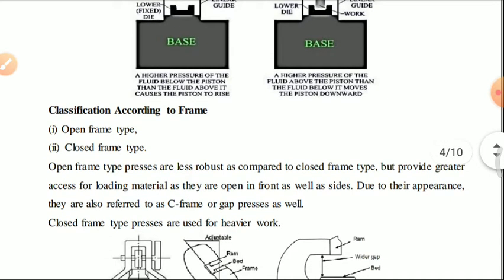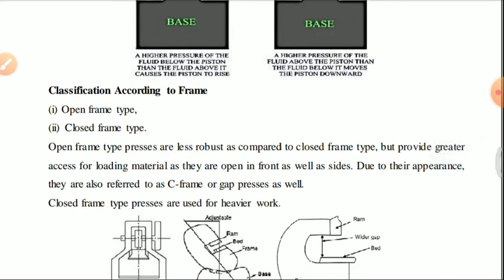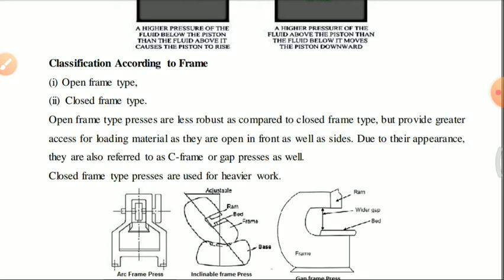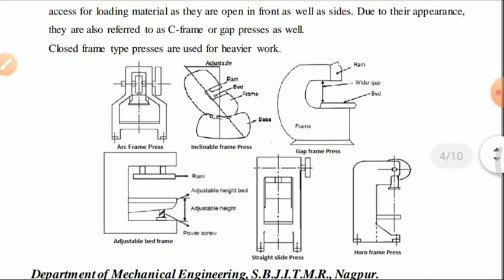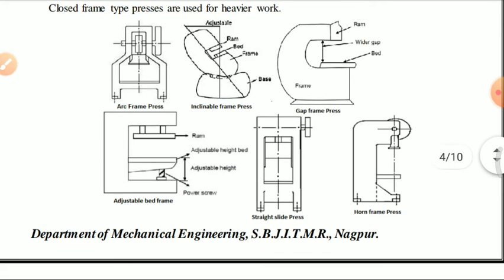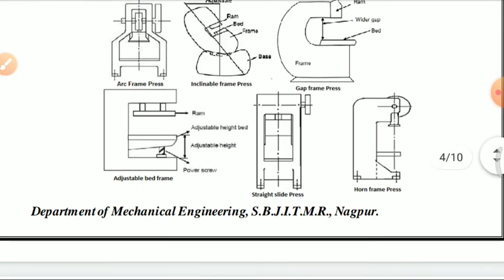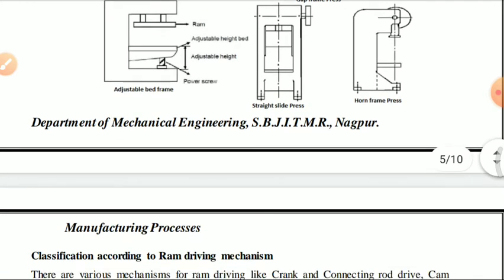Classification according to frame type: the basic configurations are open frame type and closed frame type. Open frame type means the die can be accessed from three directions. If the die can be accessed from only two directions — front and back — it is called a closed frame type. Examples include arc frame, inclinable frame, gap frame, adjustable bed frame, straight slide, and horn frame.